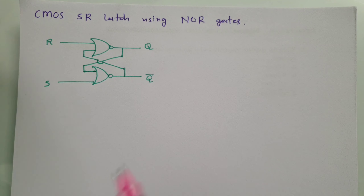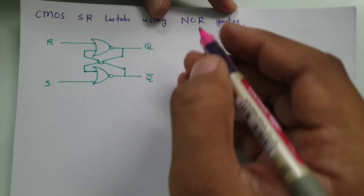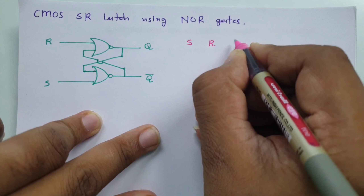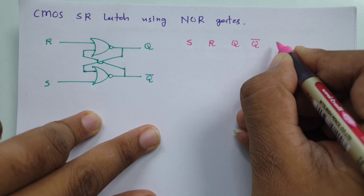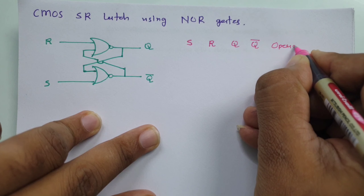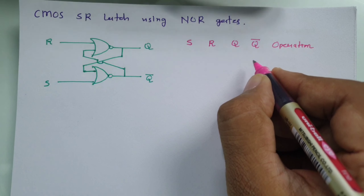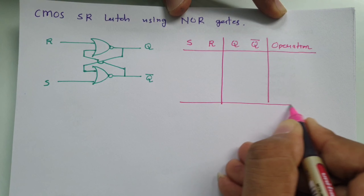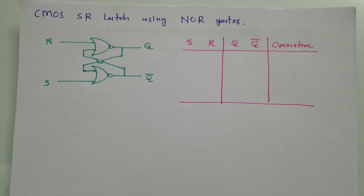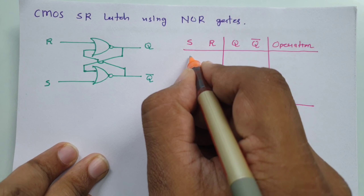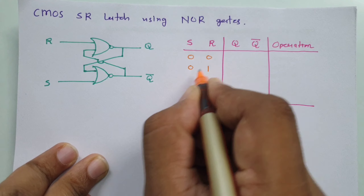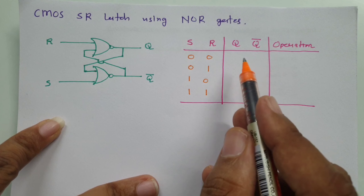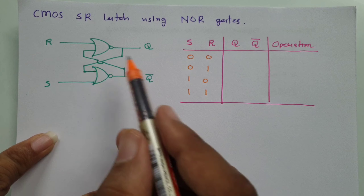Now let us understand the working of SR Latch using NOR gate by its truth table. We have inputs S and R, and outputs Q and Q-bar. Since there are two inputs, there are four combinations: 00, 01, 10, and 11. I'll explain the output for each combination and the corresponding operation.